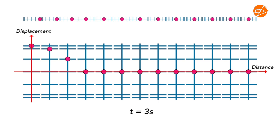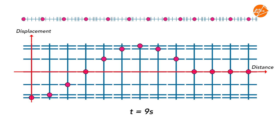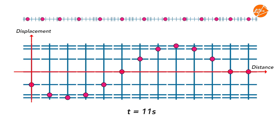This process of particles interacting with each other, due to the presence of attractive forces between them, repeats itself from t equal to 4 seconds to t equal to 12 seconds. It is important to note that all particles in the longitudinal wave are vibrating about their equilibrium position. The particles do not move with the wave motion and there is no mass transfer.